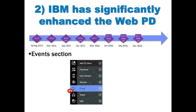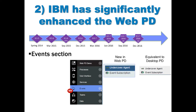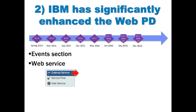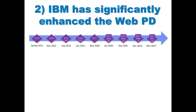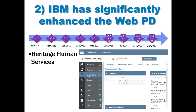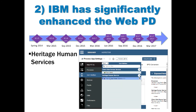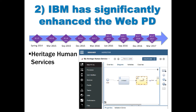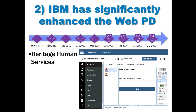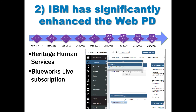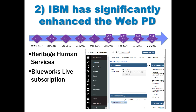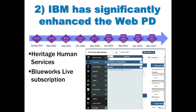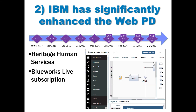In the December 2016 release, there's a new events section in the web PD, which allows you to create UCAs and event subscriptions. There's also a brand new web services connector. Most recently, in the March 2017 release, your old heritage human services can be directly edited in the web PD, allowing you to preserve the investment you've already made in these screens. You can now subscribe to your processes in BlueWorks Live from the web PD, and import a process blueprint to make it a process application executable within BPM.